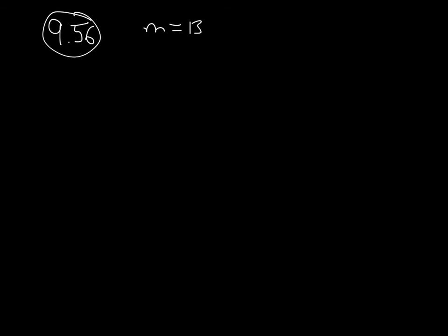The last question in chapter 9 was number 56. We have an artificial satellite of 1,300 kilograms made of aluminum in a circular orbit at a height of 100 kilometers above Earth's surface. Atmospheric friction removes energy from the satellite, causing it to spiral downward and ultimately crash into the ground. We know the mass is 1,300 kilograms and the height is 100 times 10 to the 3 meters.